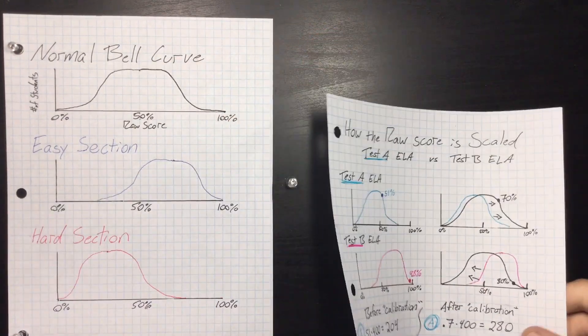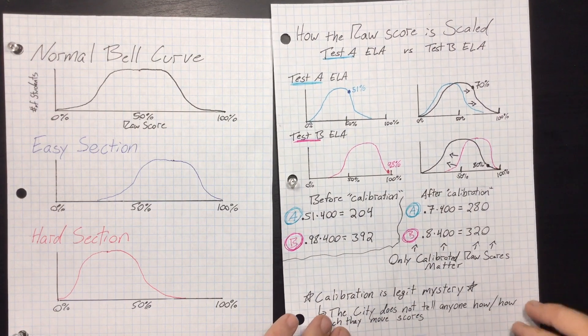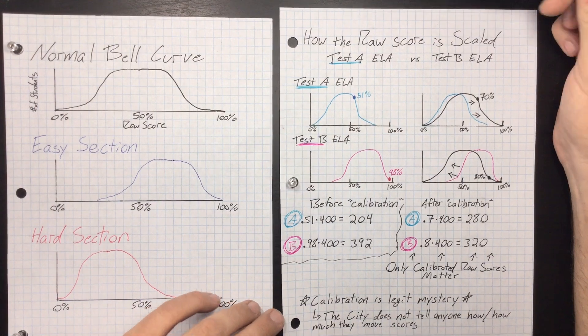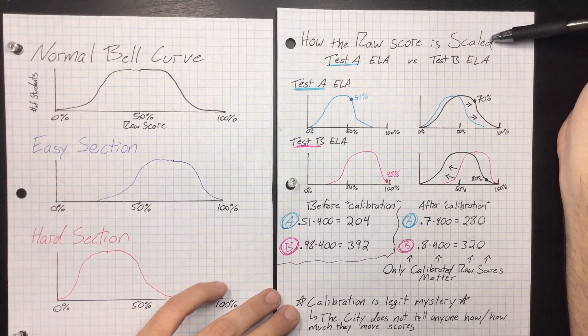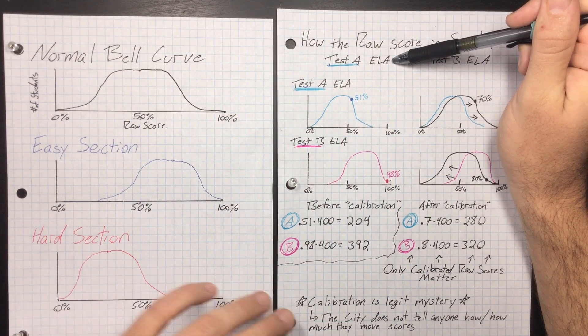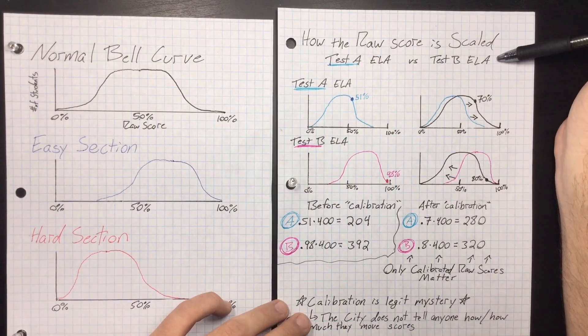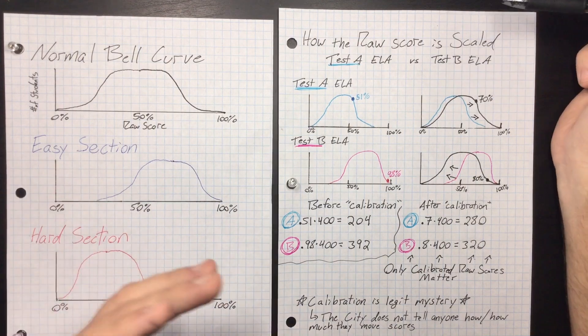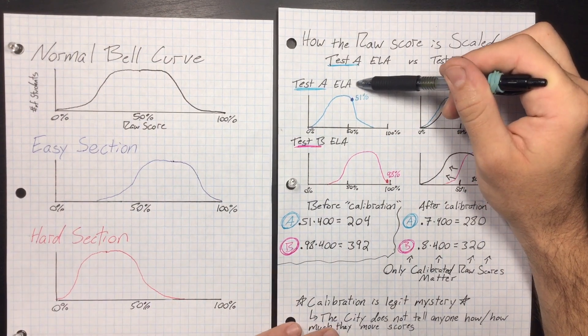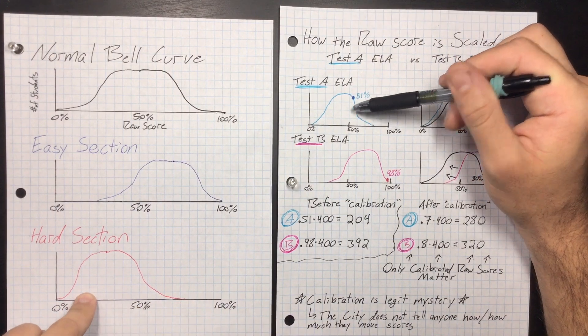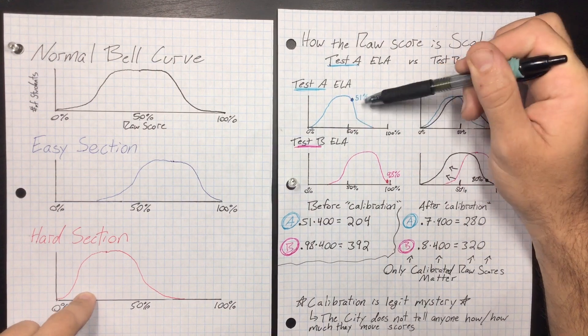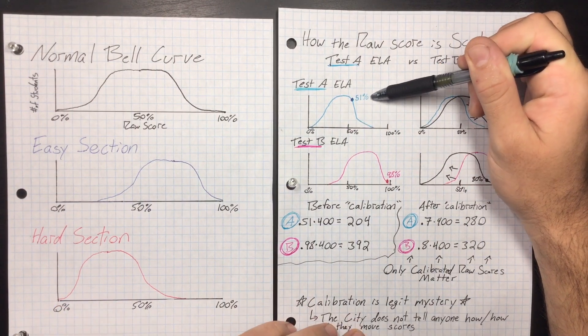So because they want this, and sometimes the section is easy and sometimes the section is hard, they have to do what they call calibration and scaling - how the raw score is scaled. So let's say this is the ELA section for test form A, and let's say your buddy in the same class got test form B. They don't give the same test to every single student. So let's say that you got this test A and it was a hard section.